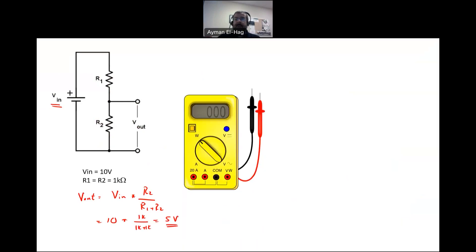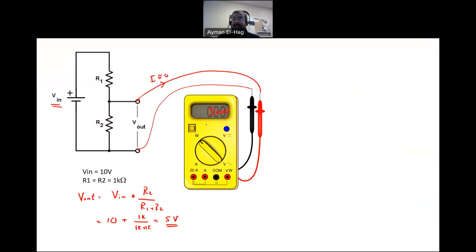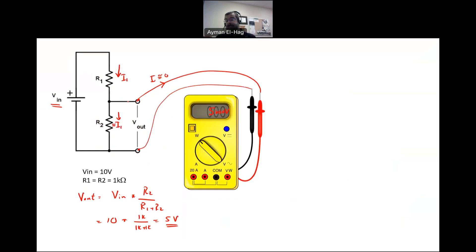If I bring a voltmeter to measure this and connect its red terminal to the output point and the black terminal to ground, I measure 5 volts. The current going into the voltmeter is almost zero because the input impedance of the voltmeter is essentially infinite. So the current I1 through the divider is unchanged — no current flows into the voltmeter.